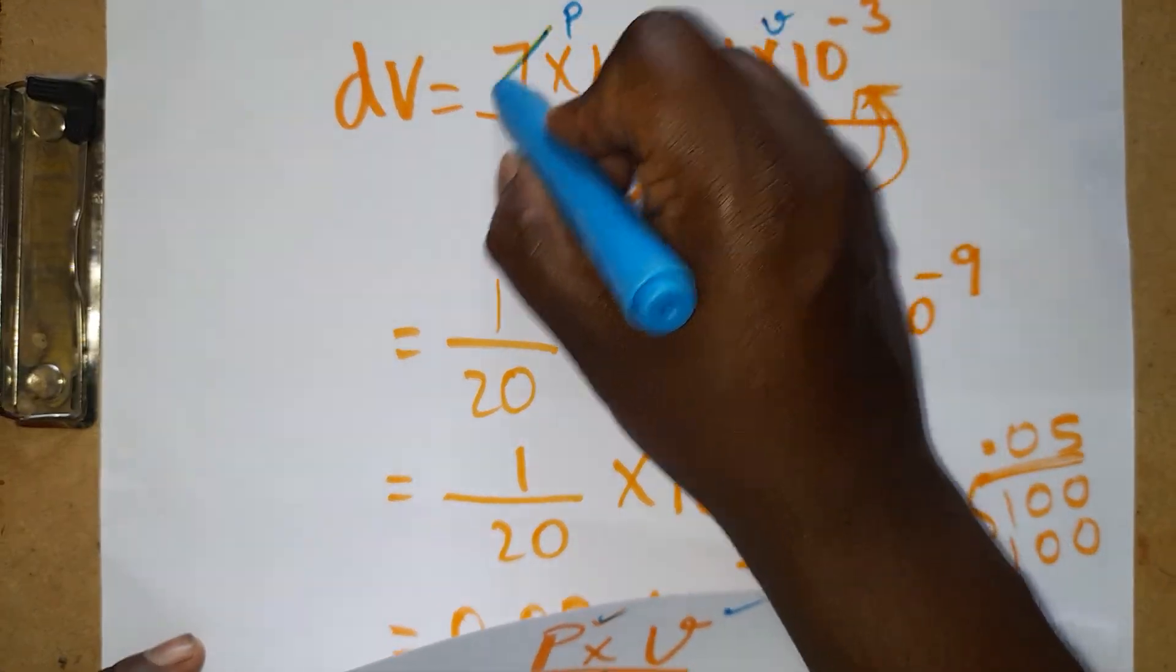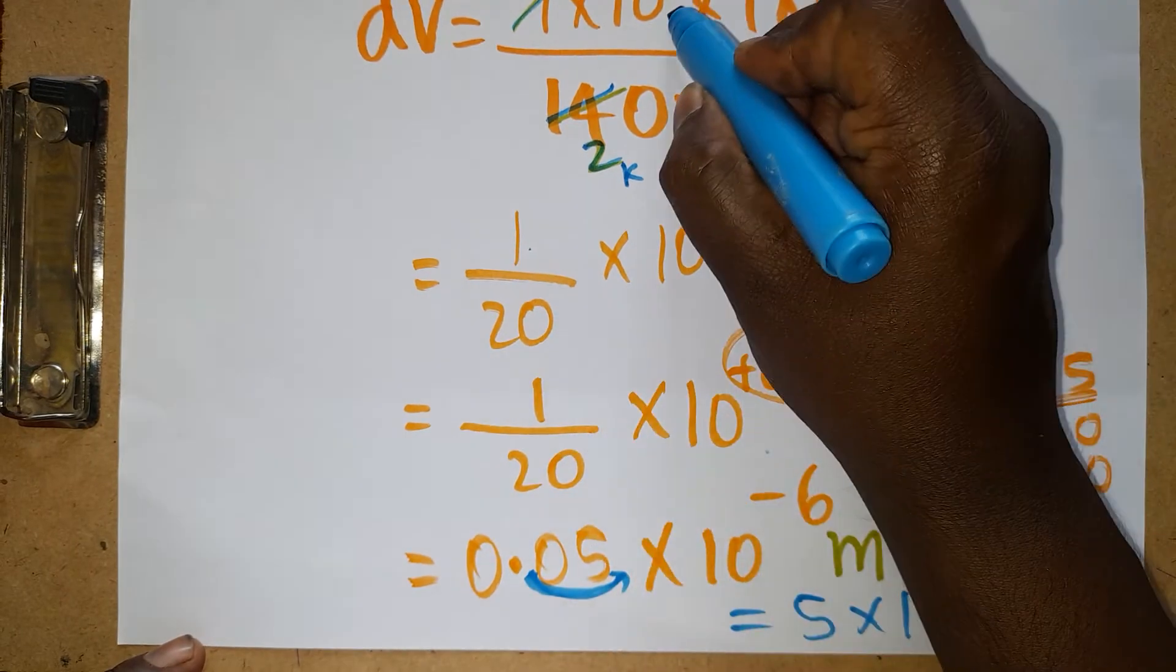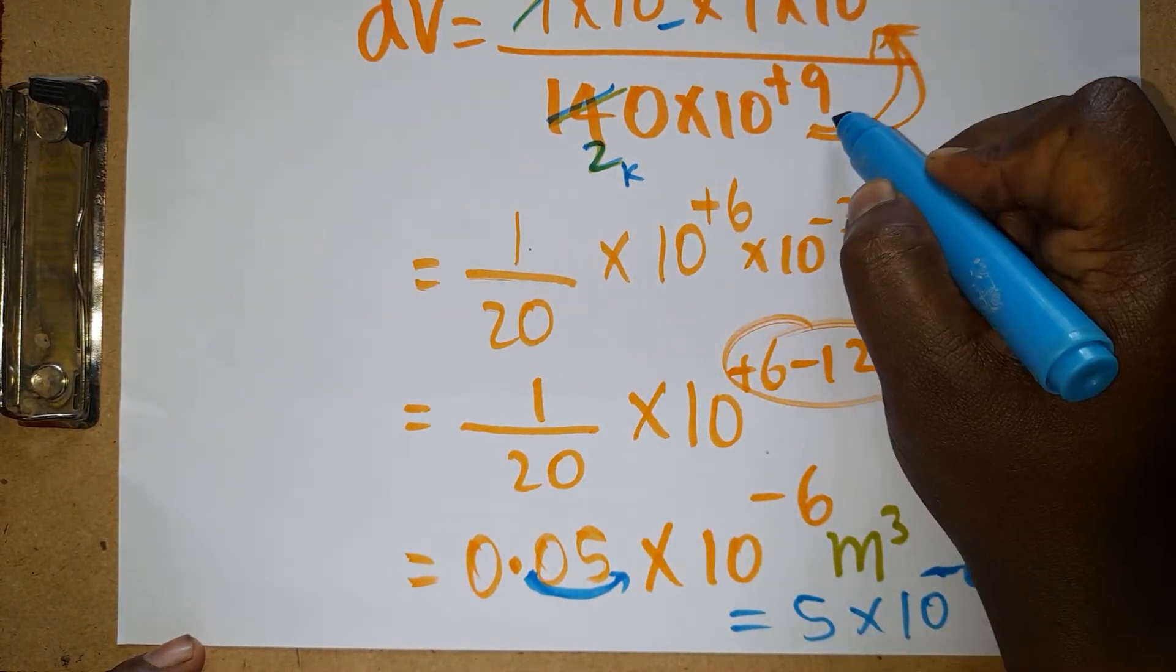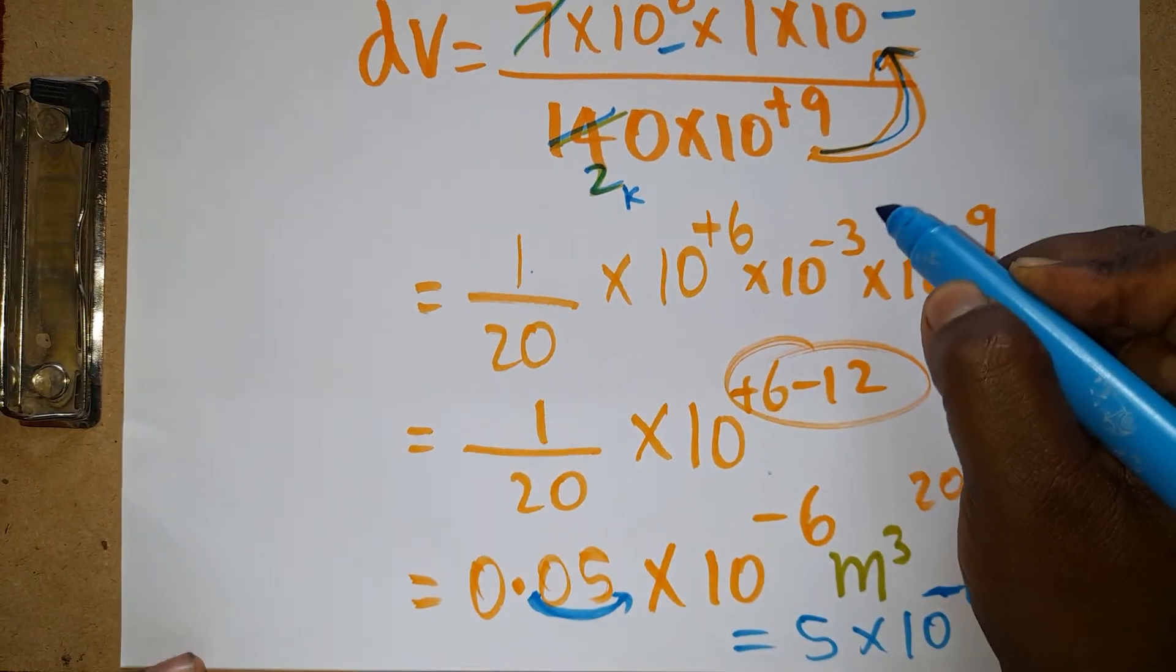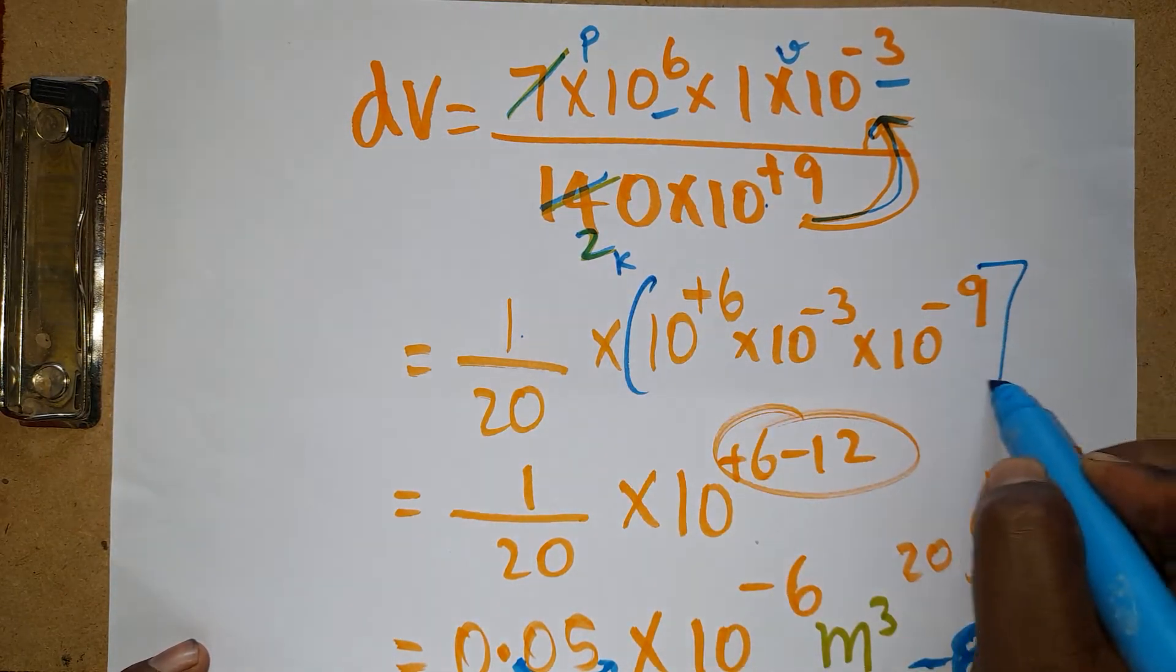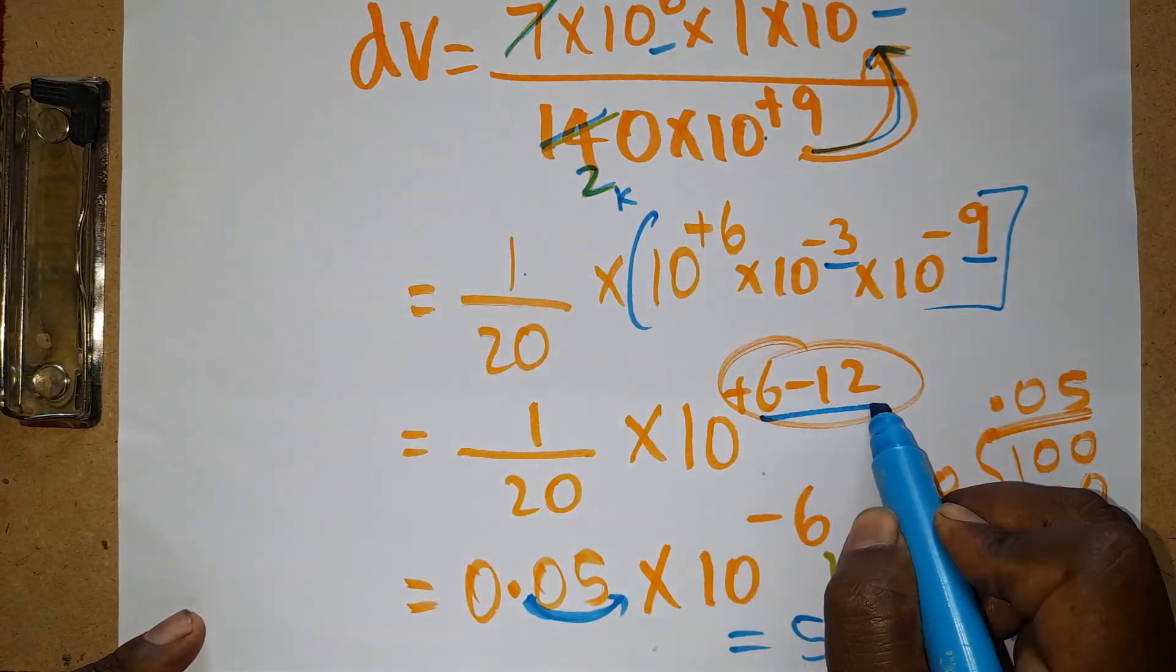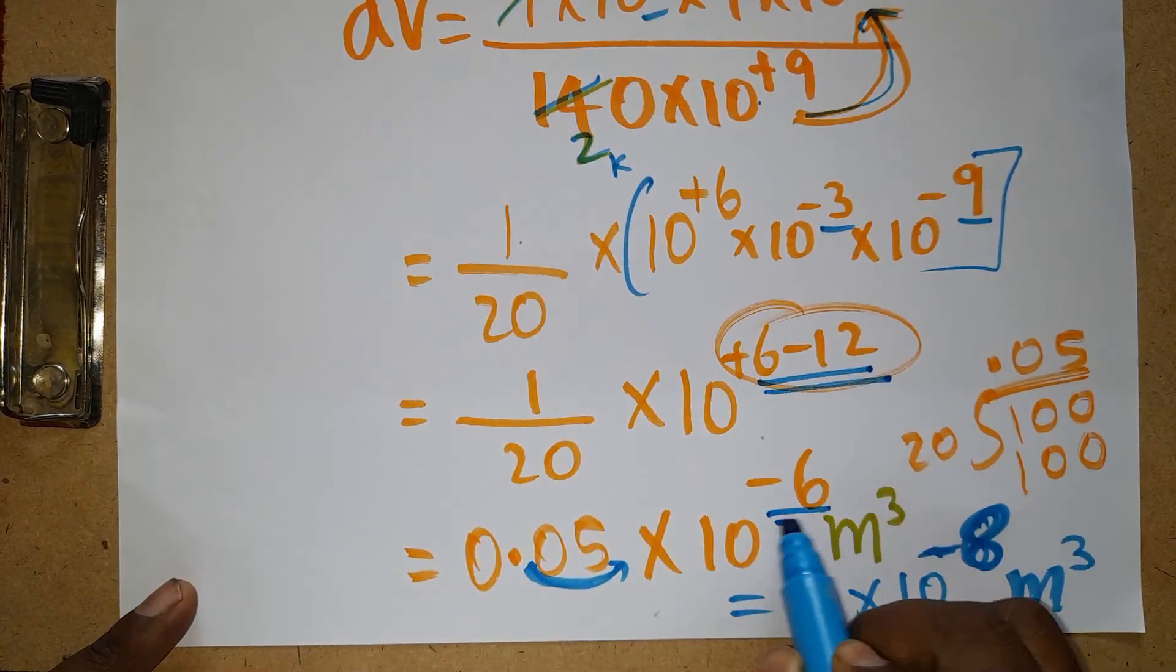Now I cancel this two times. 1 divided by 20. The power will be +6 minus 3. This I am taking from denominator to numerator will become plus 9, which becomes minus 9. Plus 6 minus 12: the answer will be minus 6 power.